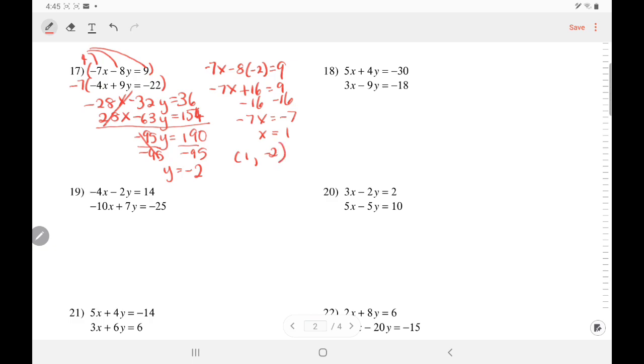So let's try number 19 and you can choose to eliminate either the x or the y. Let's choose y. They're already opposite, so I will multiply the first equation by 7 to get a 14 and second equation by negative 2 to get a negative 14. We want them to be opposites.